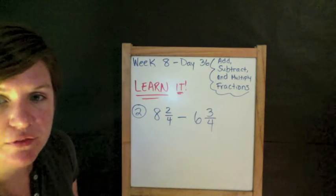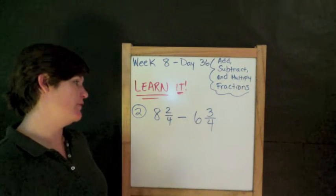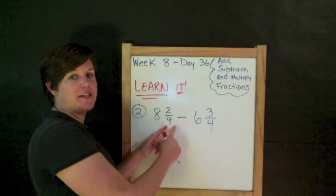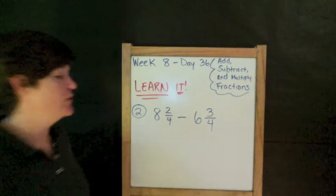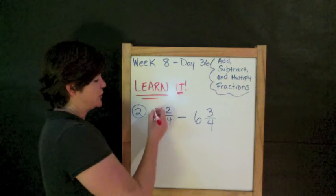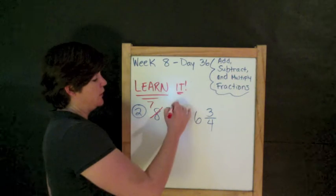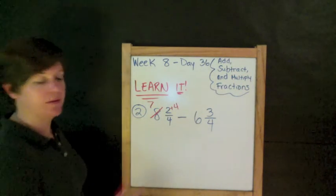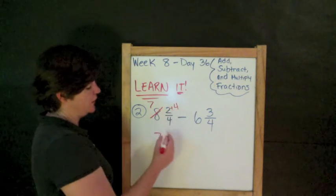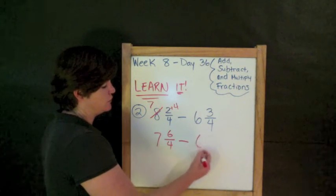Here we are subtracting. So, I've got 8 and 2/4 minus 6 and 3/4. Now, when we're subtracting, we need to make sure that our fraction over here is actually greater than our fraction there. So, 2/4 minus 3/4. I can't do that, so I need to regroup. So, this would actually become 7. And because of that, I'm going to add on 4 equal parts. So, plus 4. My denominator was 4. Let me rewrite this as 7. 2 plus 4 is 6. Keep my denominator the same. This is called regrouping fractions.